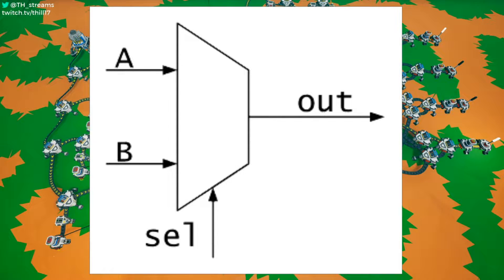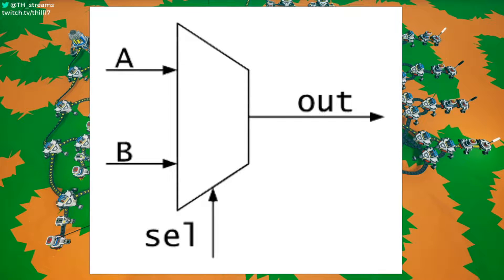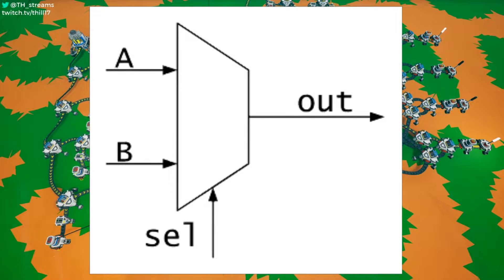The inputs we can have can be any number of bits, meaning that we could have two-bit, three-bit, or four-bit inputs, but each input needs to be the same number of bits, otherwise the mux is not going to function properly. As to the number of inputs, it can be any power of two — if our select input is one bit, we can choose between two inputs; if it's two bits, we can select between four different inputs. So our inputs can be two, four, eight, sixteen, and so forth.